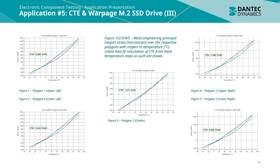The CTE measurement results show Figures 1 through 5, each displaying the mean engineering principal or major strain in microstrain over respective polygon gauge areas with respect to temperature. A linear best fit calculation of the CTE from these temperature steps is shown for each polygon. The polygons correspond to the upper left corner, the lower left corner, the center, the upper right, and the lower right of the SSD.